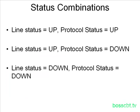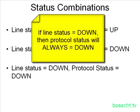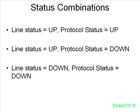The down-down combination indicates a problem on the physical layer. If the line status is down, the protocol status will always be down as well, because if there's no physical connection — or a problem with the physical connection — there's no way to send data link protocols across it, since you need that physical connection. So if you see line status down, the protocol will always be down. You need to first troubleshoot the physical layer.